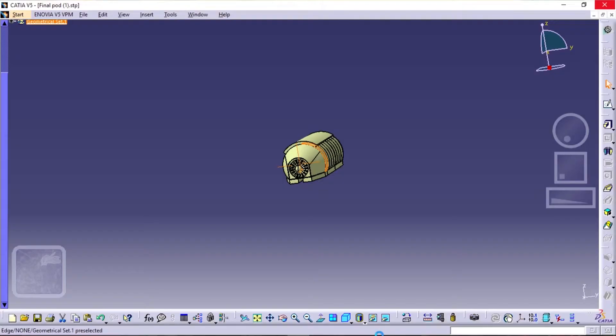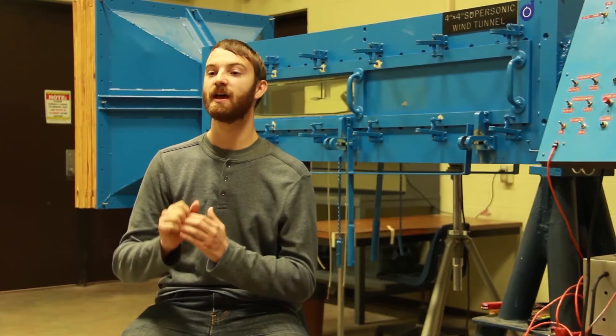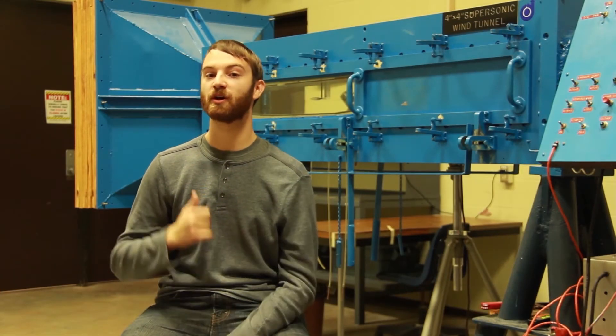The Hypershock pod has an efficient aerodynamic shape with a compressor up front which provides air to levitation and thrust which helps us go faster.